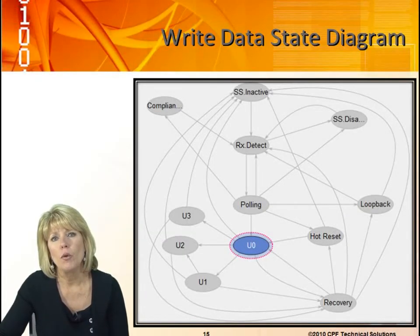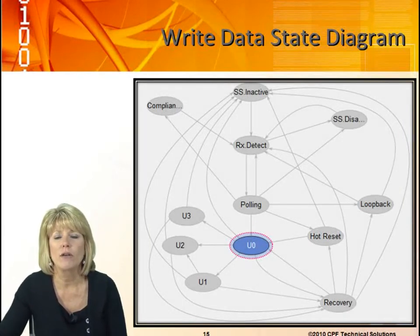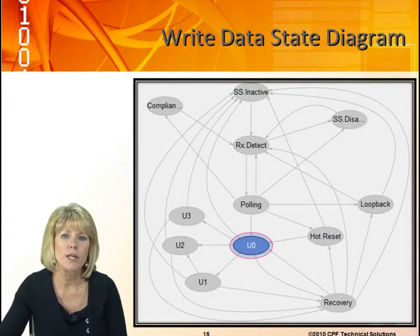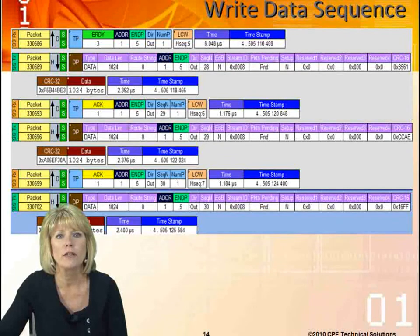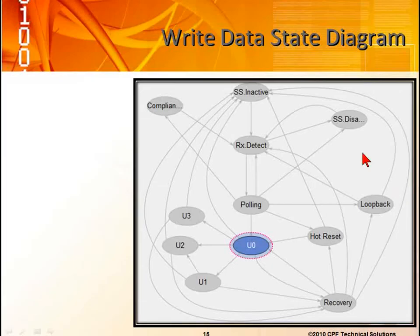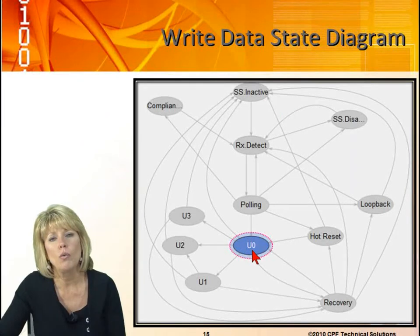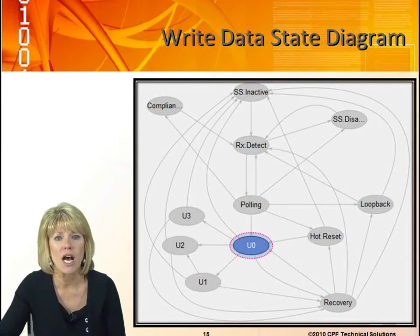This is a state diagram for the write data state, and it looks very similar to the state diagrams we've seen previously. We'll come in and we're going to be in the U0 state. This happens to be a screen capture for the particular trace we just saw. In the LaCie analyzer, you can map a captured trace to the state diagram, and it will show you what states were entered during that entire trace capture. The only state we were in was U0, so only U0 is highlighted — all other states are grayed out, meaning they were never entered.